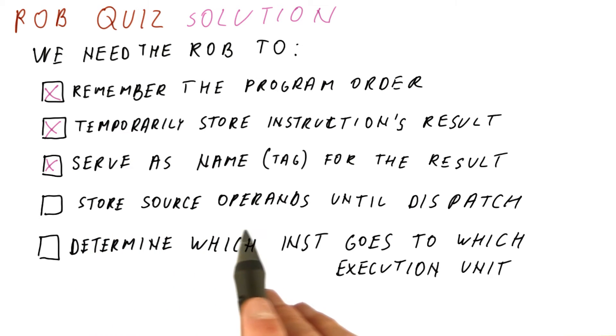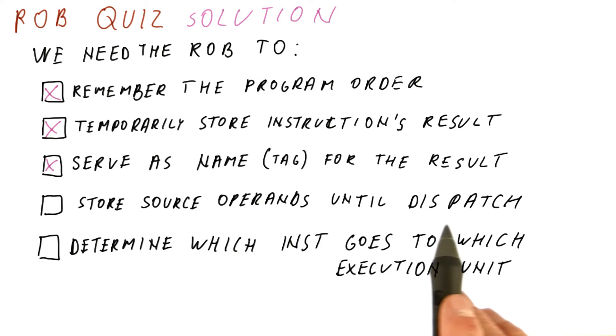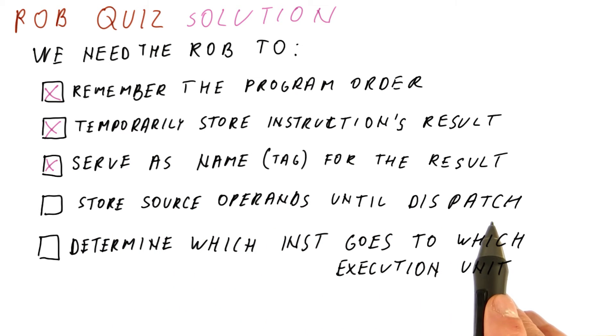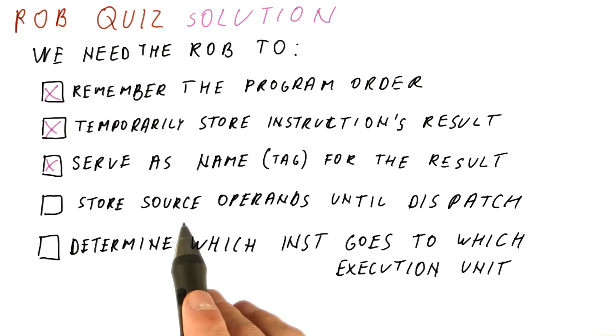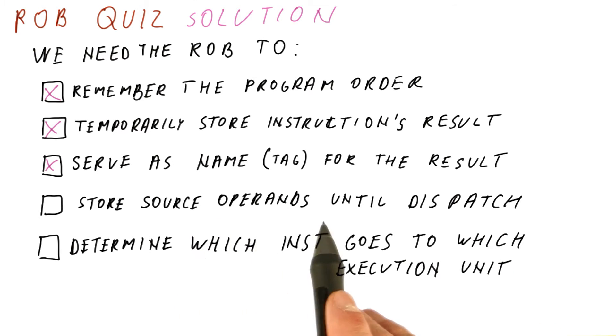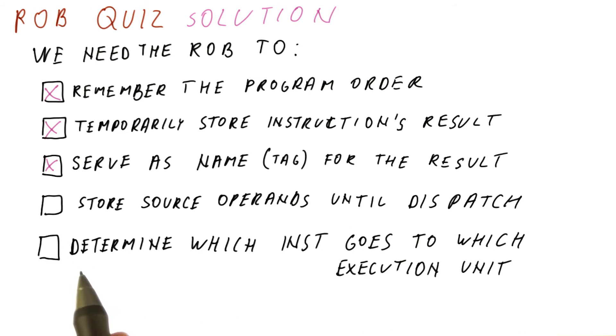To store the source operands until dispatch — no. The reservation station still retains this role. Basically, the reservation station still stores the source operands until dispatch, so this answer is not correct.